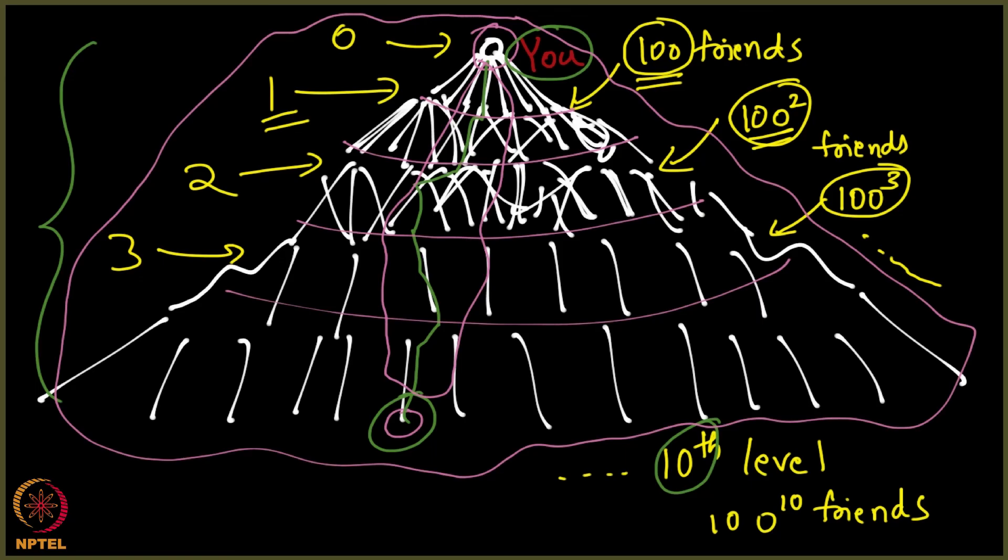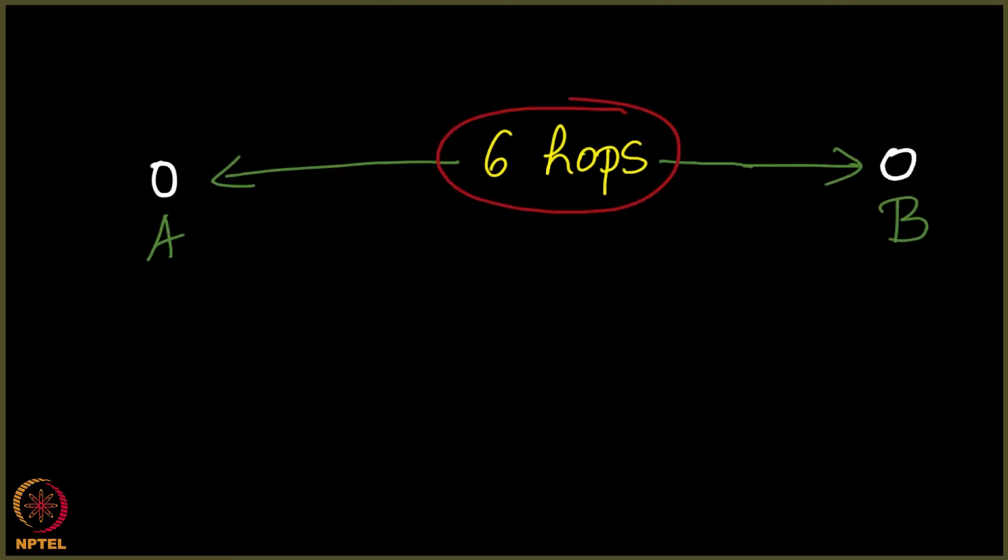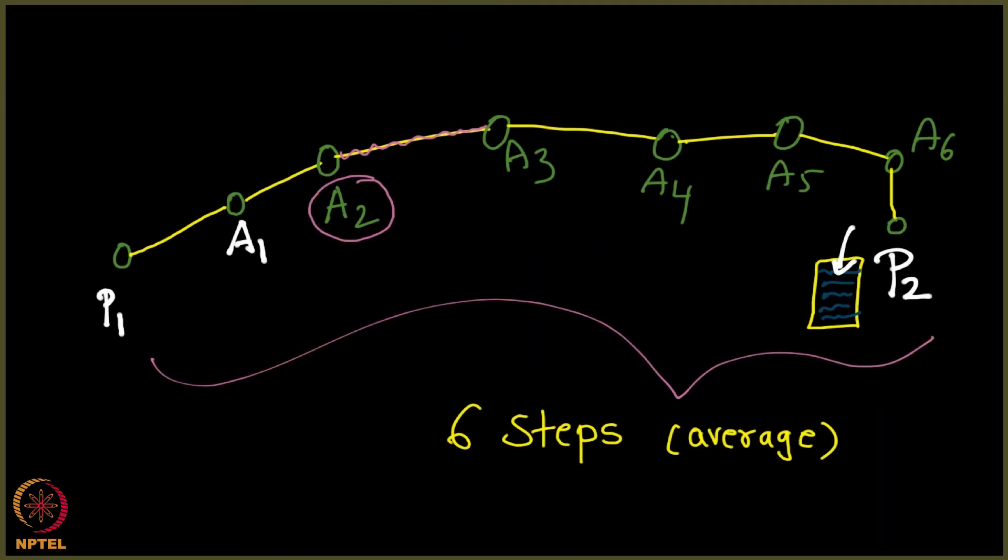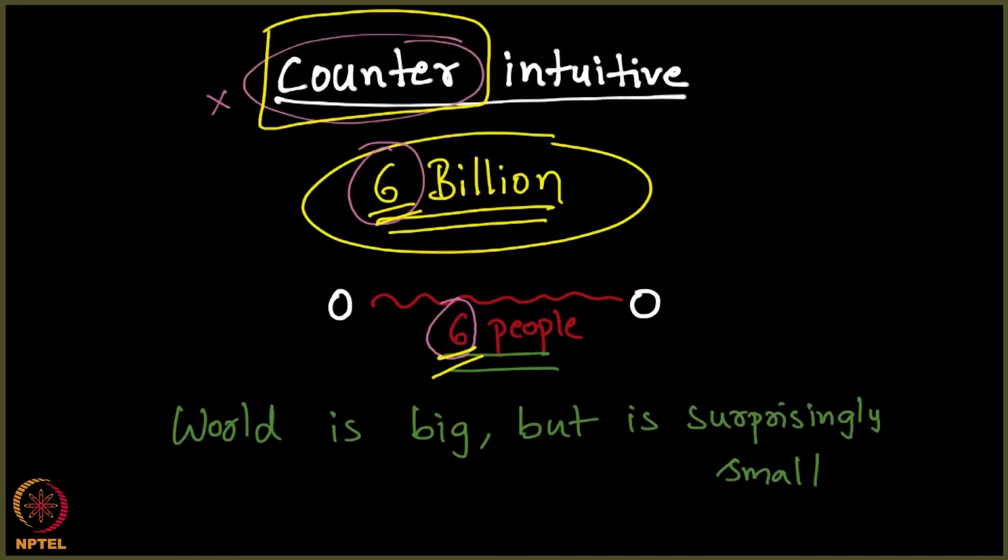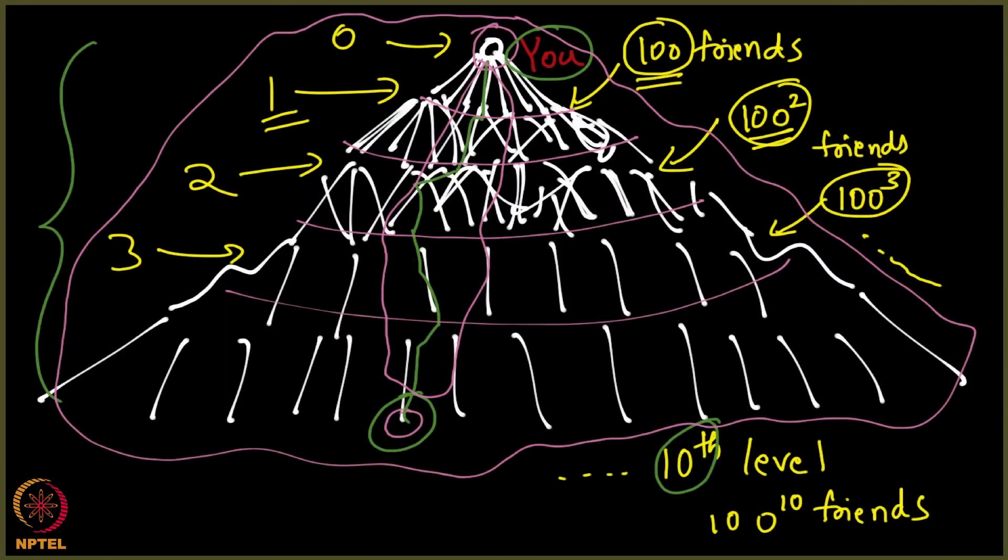We saw that it is indeed counter-intuitive given that it is 6 billion, but any two people are separated by 6 hops, said Milgram. Milgram said this, and this is indeed counter-intuitive. But when we see it properly in a different lens, we observe that it is not all that counter-intuitive - it is indeed sort of obvious.